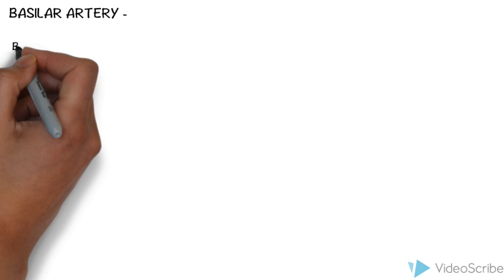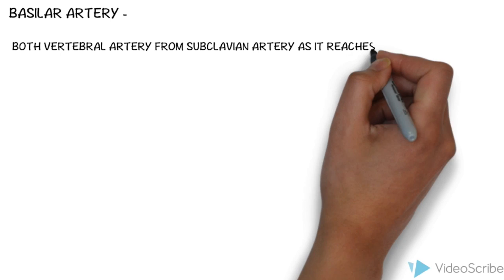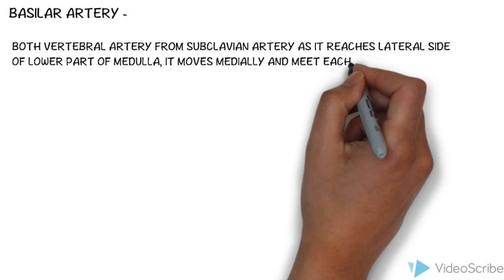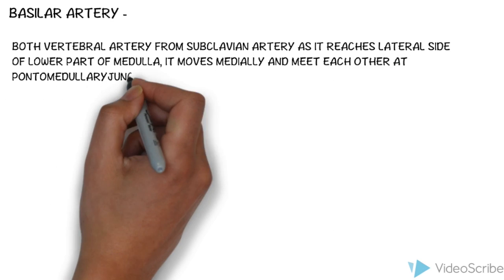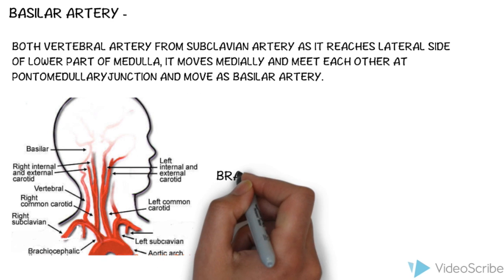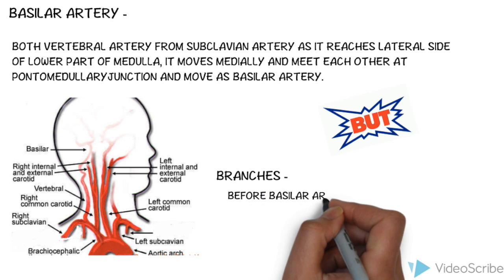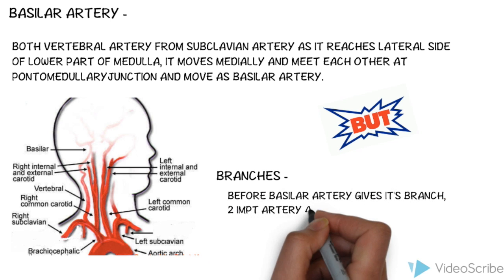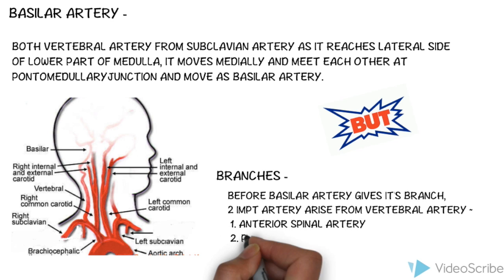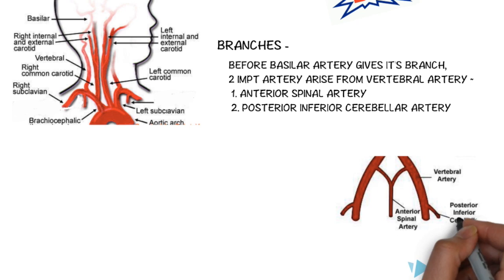The basilar artery is formed when both vertebral arteries from the subclavian artery reach the lateral side of the lower part of the medulla. They move medially, meet each other at the pontomedullary junction, and continue upward as the basilar artery. Before the basilar artery gives its branches, the vertebral artery itself gives two important branches: the anterior spinal artery and the posterior inferior cerebellar artery (PICA). You can appreciate these two arteries in this diagram.